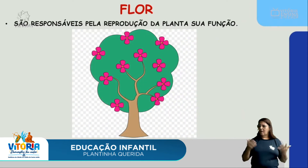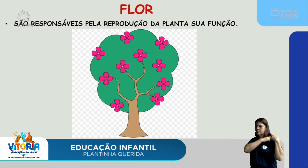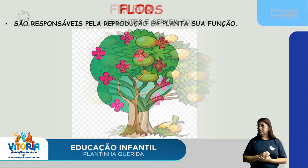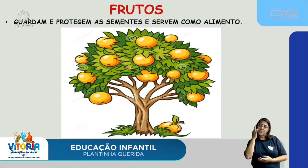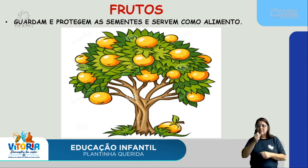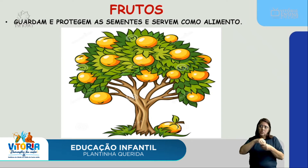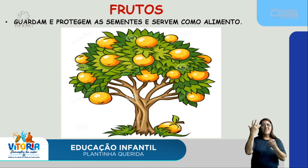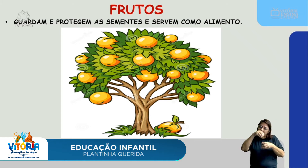Agora vamos falar um pouquinho da flor. As flores são responsáveis pela reprodução da planta. Agora vamos falar um pouquinho sobre os frutos. Os frutos guardam e protegem as sementes e servem como alimento. Então, dentro dos frutos estão as sementes que, plantadas na terra, nascem, crescem e formam uma nova planta. O fruto também serve como alimento.